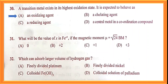Using the spin-only magnetic moment formula √(n(n+2)), putting n = 2 gives √24 as the magnetic moment, so x = +2. Option B is the correct answer. Question number thirty-two: which can absorb a larger volume of hydrogen gas? Option D — colloidal palladium absorbs a larger volume of hydrogen gas.